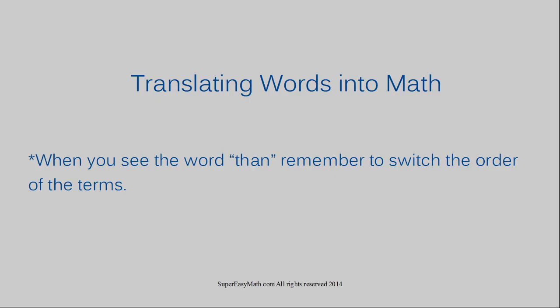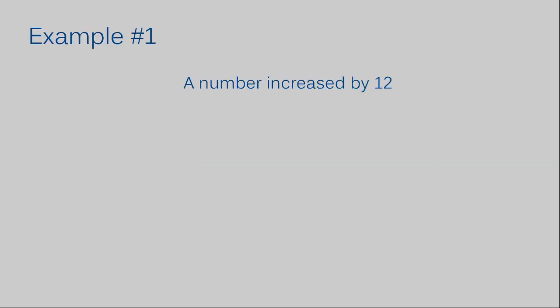Let's move on to example number one. Example number one says, a number increased by 12. So I'm going to underline different parts of the sentence, and we're going to use that to figure out how we need to write this thing. A number. This is basically saying you have a variable, and we don't know what it is, so they're just calling it a number. So let's say I'm going to use the variable t. So I'm going to just write like a lowercase t.